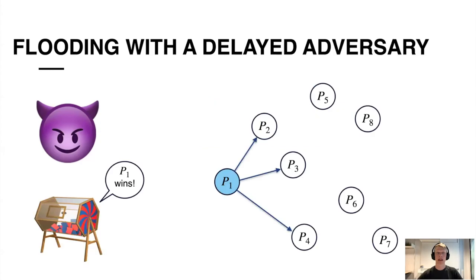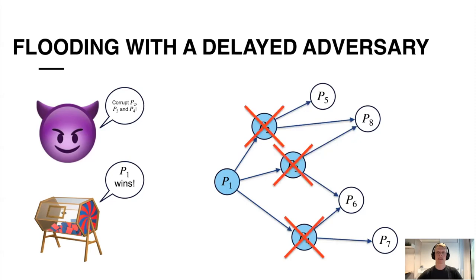So let us now try to analyze the flooding procedure against such a delayed adversary that is delayed for the time it takes to send plus the time it takes to re-send the message. So as before, party one sends out the message to his neighborhood. But now, of course, the adversary can try to corrupt, but as the corruption doesn't become effective until the neighborhood has already started to forward the message, then it's too late for the adversary once the corruption actually becomes effective, and all parties will anyway learn the message.